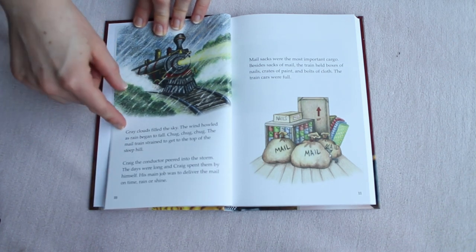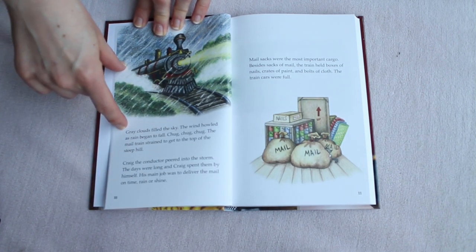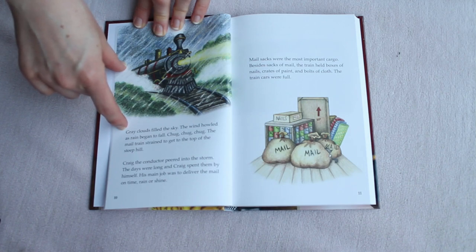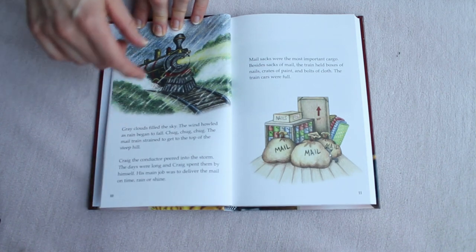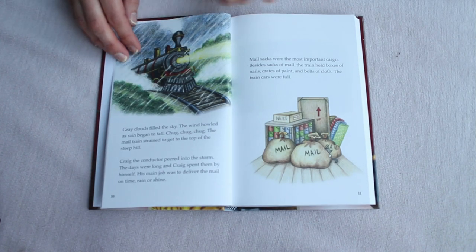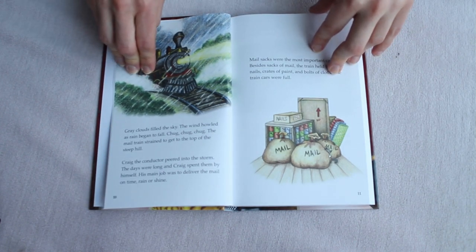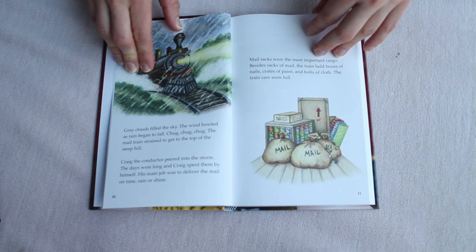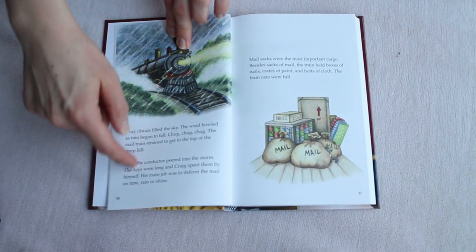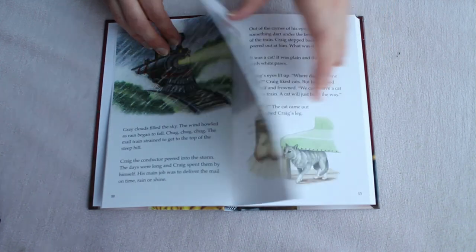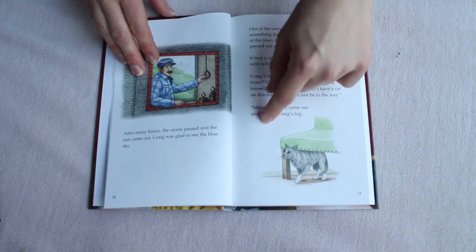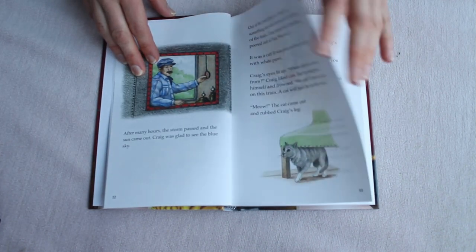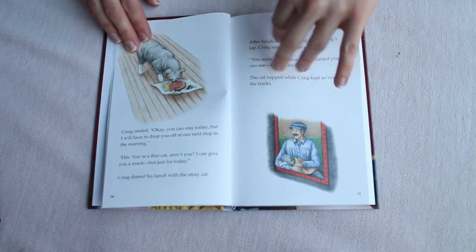All of the pictures in this color edition are very nicely illustrated and very colorful. And it is looking more like a chapter book than the prior books in this series. The text is dramatic - Gray clouds filled the sky, the wind howled as rain began to fall, the male train strained to get to the top of the steep hill. Kind of dramatic for a five-year-old, but I'm sure they'll love it. About maybe half of this page is filled with text, then another small paragraph on this page.